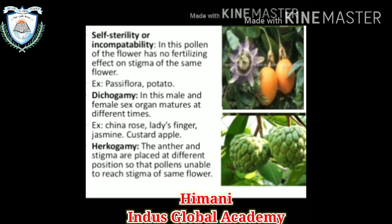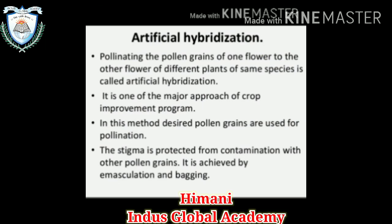Self-sterility or incompatibility — in this, the pollen of a flower has no fertilizing effect on the stigma of the same flower. Example: passiflora or potato. Dichogamy — in this, the male and female sex organs mature at different times so that they can avoid self-fertilization. Examples include china rose, ladyfinger, jasmine, and custard apple. Hercogamy — the anther and the stigma are placed at different positions so that pollen is unable to reach the stigma of the same flower, which also helps prevent self-fertilization.